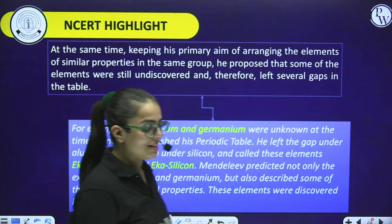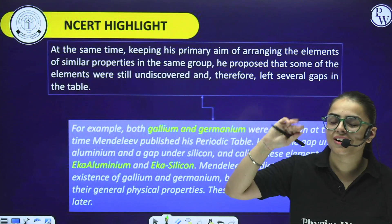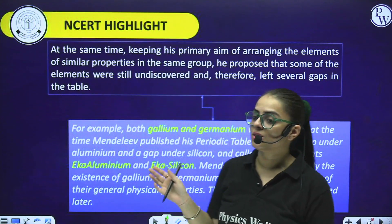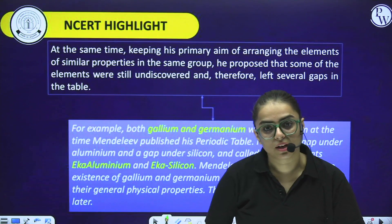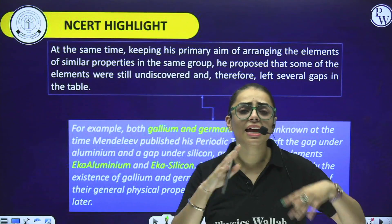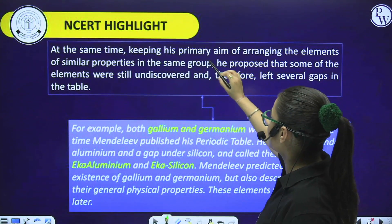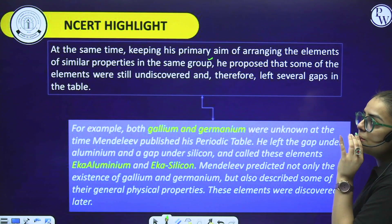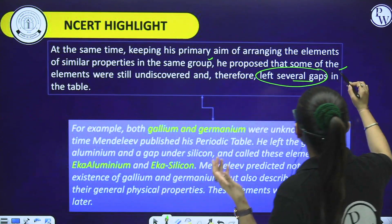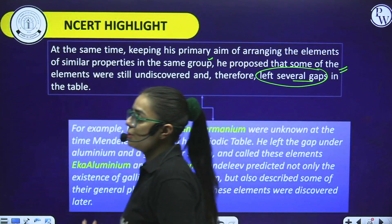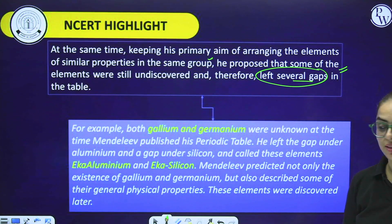You may wonder why we are reading NCERT highlights. Students often say they will read NCERT in future, but I don't want you to miss these key points, which are very important for chemistry. So I'm covering it here so we can read it together line by line. At the same time, keeping his primary aim of arranging elements with similar properties in the same group, Mendeleev proposed that some elements were still undiscovered and therefore left several gaps.